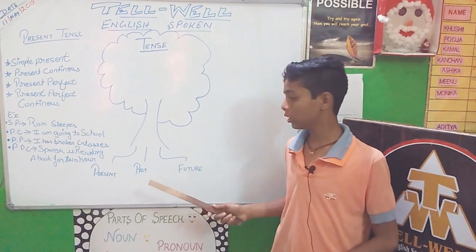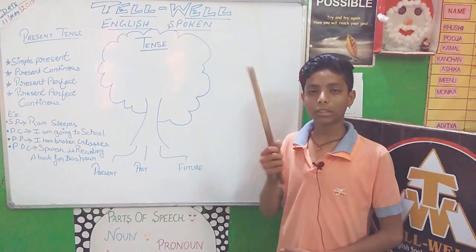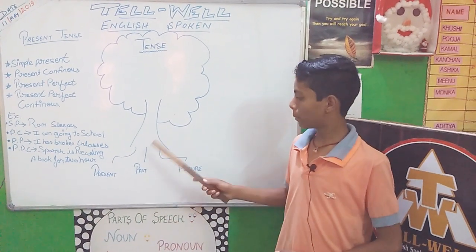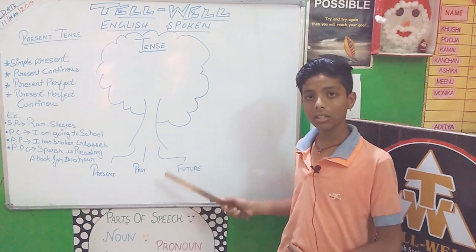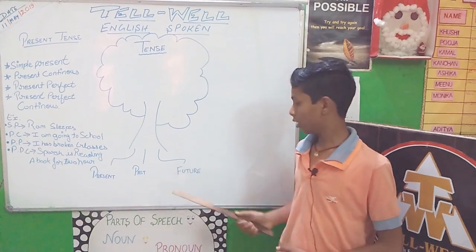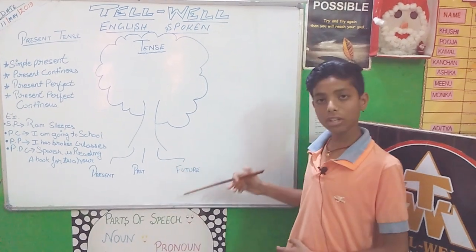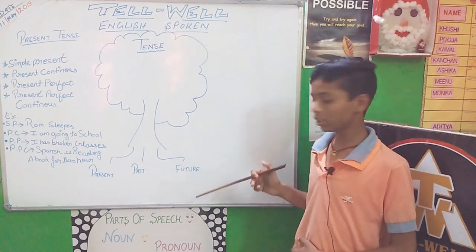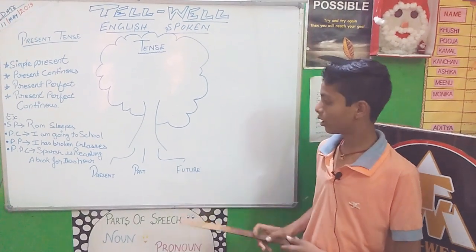Present means in Hindi: Bartman Kaal. Past means in Hindi: Bhut Kaal. Future means in Hindi: Bhaveshe Kaal.